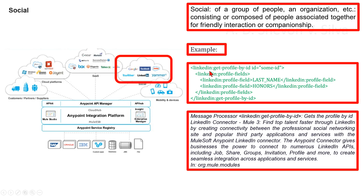Here you can see the attribute ID — the ID to search — and this is a string. Here you can see the child element linkedin:profile-fields, which is optional, representing the profile fields to retrieve. You can see the fields to retrieve, and this returns a return type of Person — profile by ID.